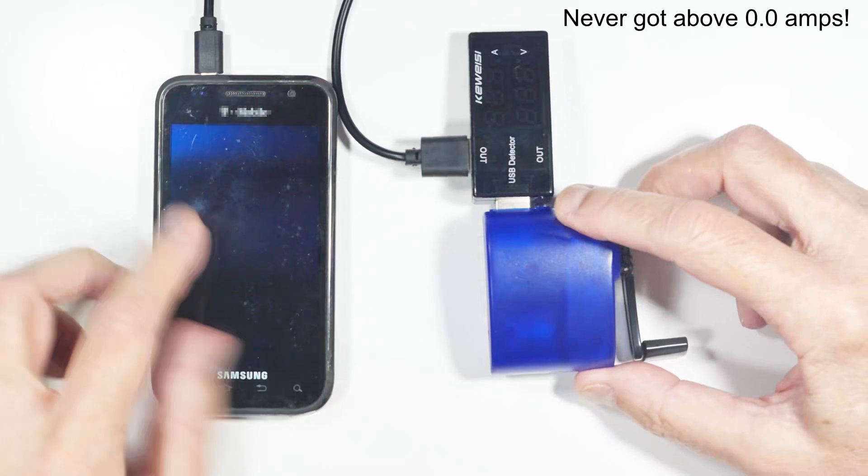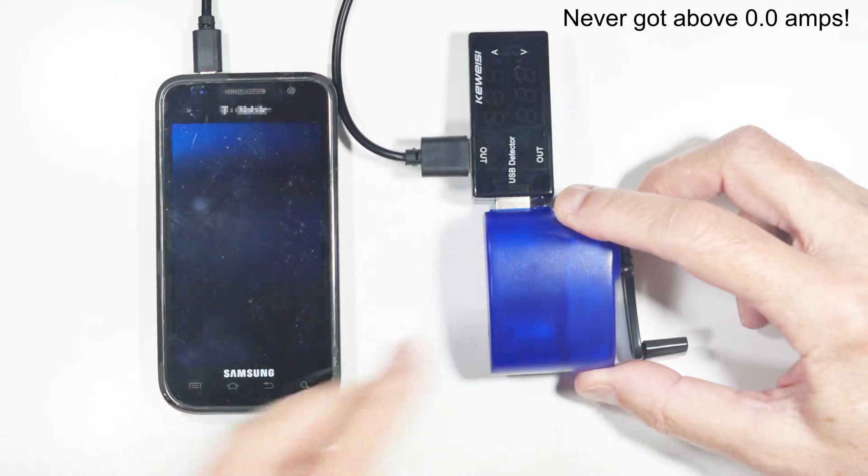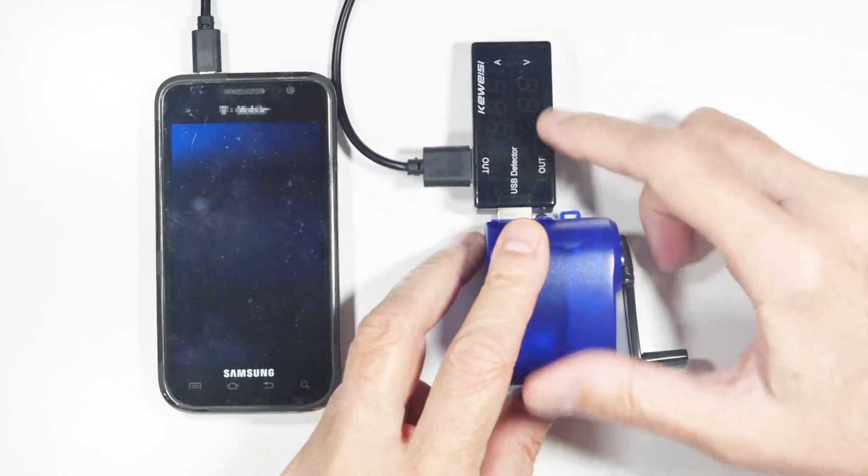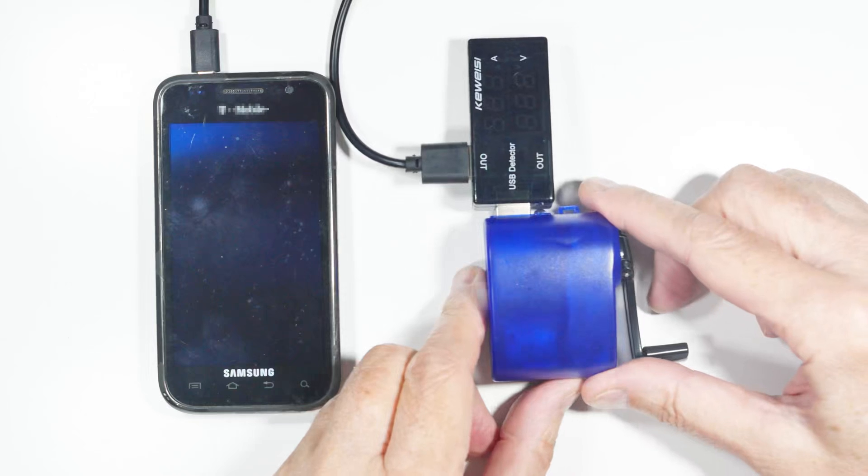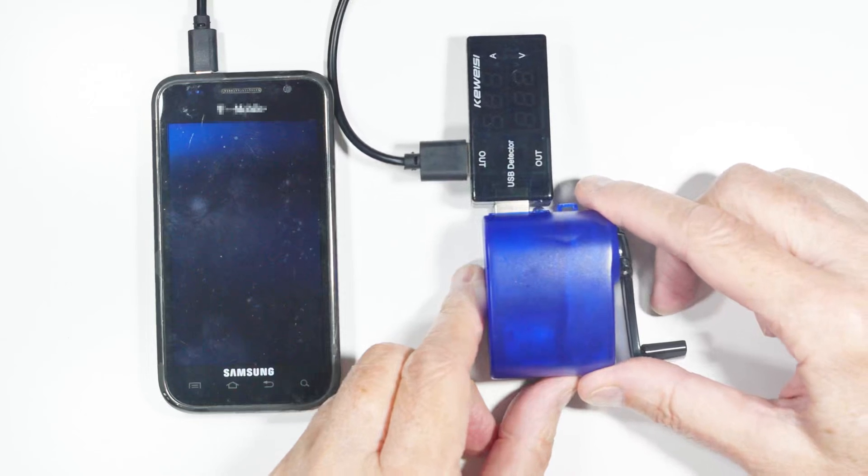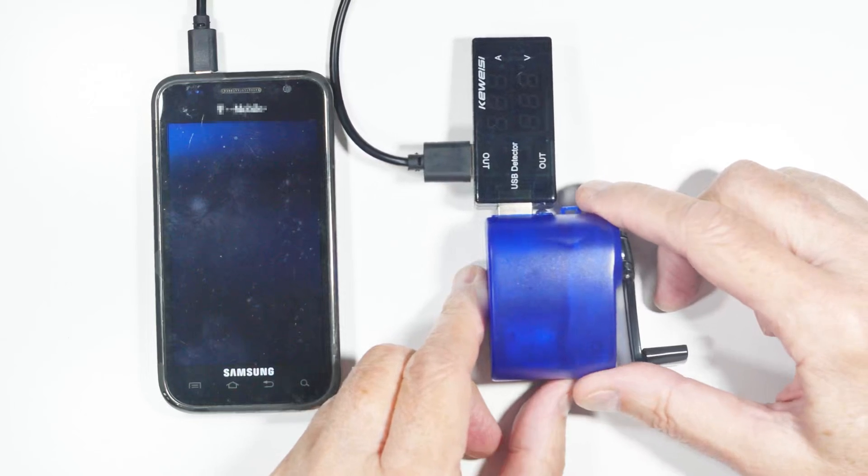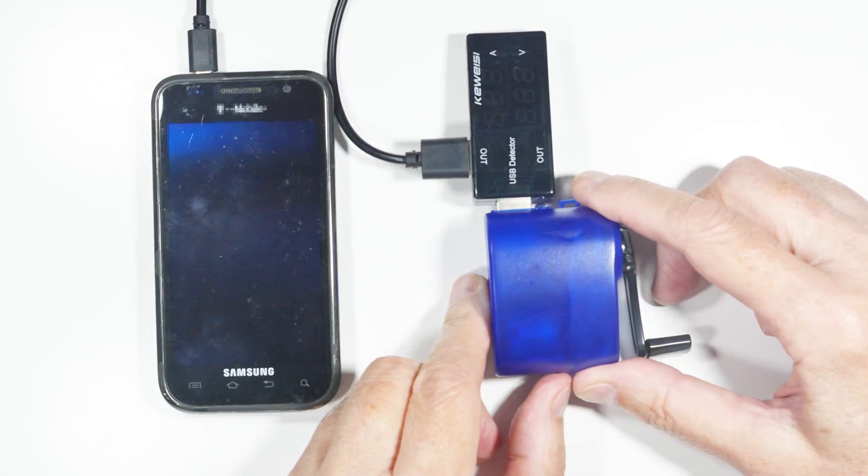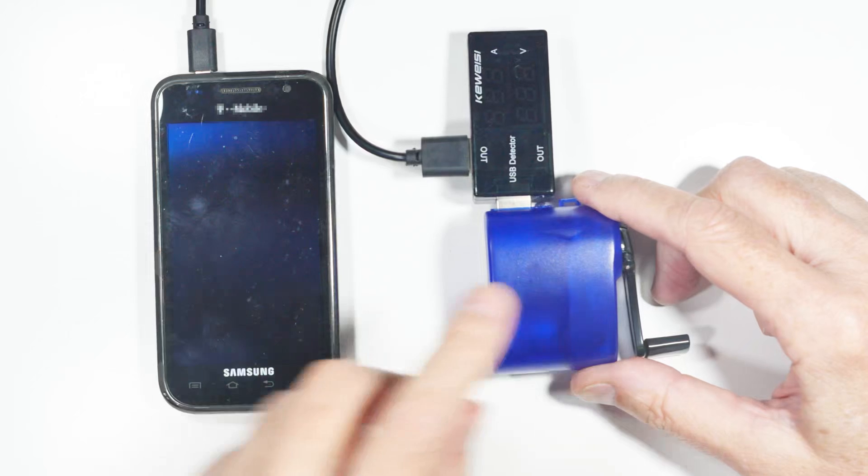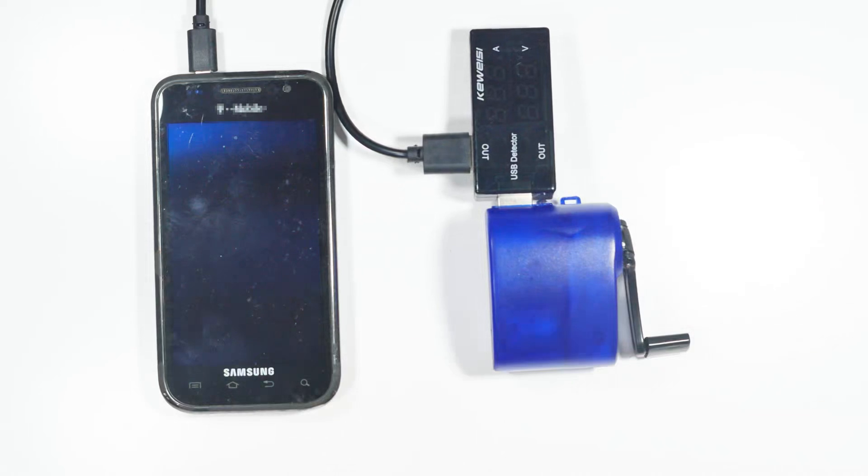Yeah I never reached the half an amp it would take to charge. I did trigger the charging circuit in the phone so I reached the five and a half volts but not the half an amp. Yeah so there is no way on earth that I could charge my Samsung S21 because if this won't charge, no way is it going to charge a bigger phone.